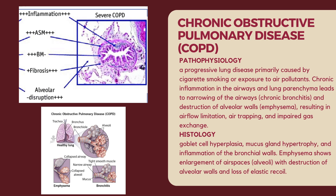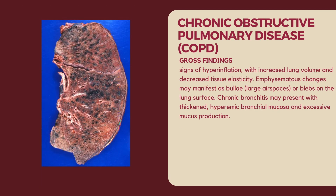Histological changes in COPD include inflammation, airway remodeling, and destruction of parenchyma. Chronic bronchitis is characterized by goblet cell hyperplasia, mucous gland hypertrophy, and inflammation of the bronchial walls. Emphysema shows enlargement of airspaces (alveoli) with destruction of alveolar walls and loss of elastic recoil. Gross examination may show signs of hyperinflation with increased lung volume, emphysematous bullae or blebs on the lung surface, and thickened hyperemic bronchial mucosa with excessive mucous production in chronic bronchitis.